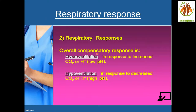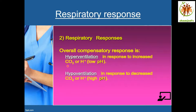The overall compensatory response is hyperventilation in response to increased CO2 or H+ ions. In respiratory acidosis, we see high CO2 and low pH because of a higher level of carbonic acid in the blood. If there is high CO2, it reacts with water to form carbonic acid, making the blood acidotic. The brain then stimulates the lungs to hyperventilate to remove CO2. As CO2 returns to normal range, carbonic acid production goes down and we get a normal pH.